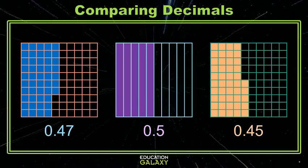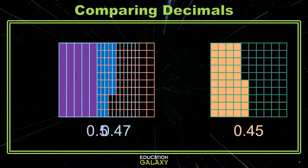Now, if I want to order these from greatest to least, which one is largest? Well, the one in the middle has the most shaded. It's the decimal 5 tenths. You'll remember that's the same as 50 hundredths. 50 hundredths is greater than 47 hundredths and 45 hundredths. So that one is the largest.